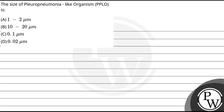Hello, children. Let's read the question. In this question, we have been asked the size of pleuropneumonia-like organism, which we call PPLO. How much size is it? We need to know the options. A is 1 to 2 micrometer. B is 10 to 20 micrometer. C is 0.1 micrometer. D is 0.02 micrometer.